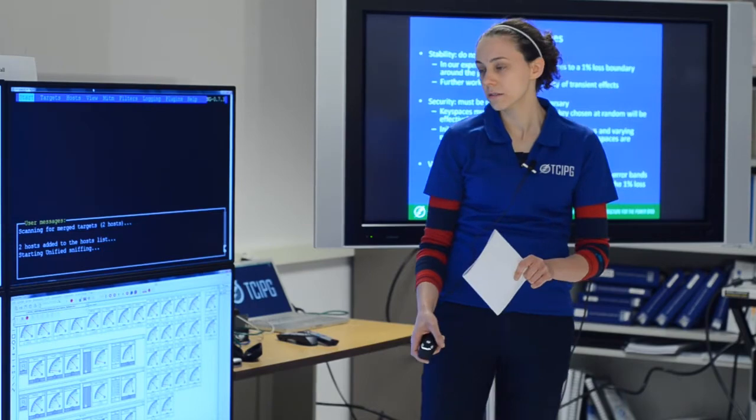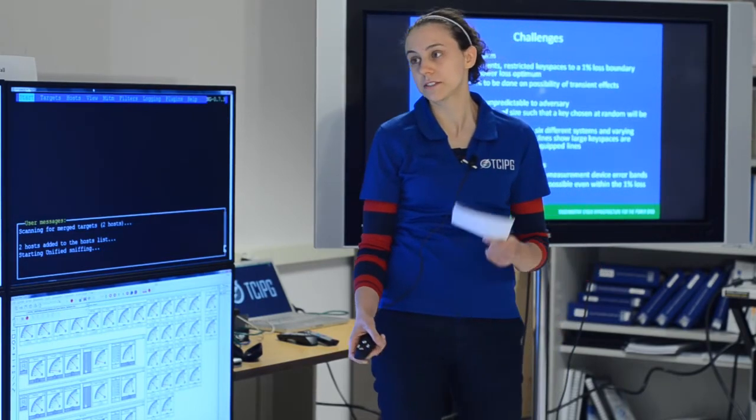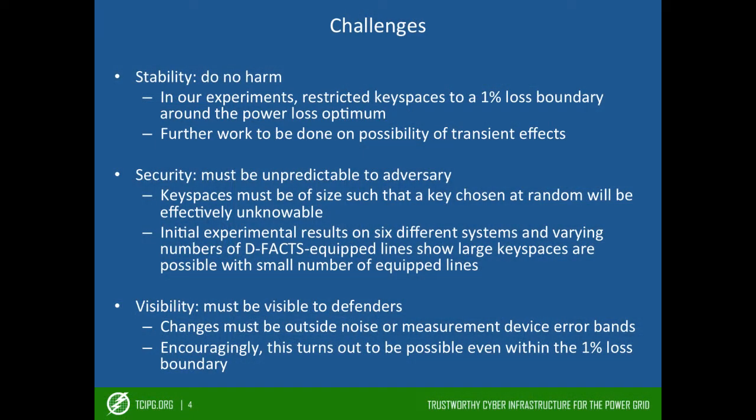And lastly, the changes that these perturbations affect must be visible to the people in the control room. So the changes must be outside any noise or measurement error bounds. And encouragingly, we found that this turned out to be possible even within this 1% loss boundary.